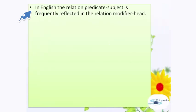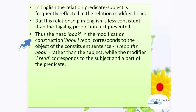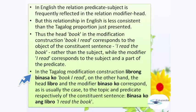This same proportion — modifier is to head in the resultant sentence as predicate is to topic in the constituent sentence — obtains in almost all Tagalog modification constructions. In English, the relation predicate-subject is frequently reflected in the relation modifier-head, but this relationship in English is less consistent. Thus, the head 'book' in the modification construction 'book I read' corresponds to the object of the constituent sentence 'I read the book' rather than the subject. In the Tagalog modification construction 'librong binasa ko' (book I read), the head 'libro' and the modifier 'binasa ko' correspond precisely to the topic and predicate respectively of the constituent sentence 'Binasa ko ang libro' (I read the book).